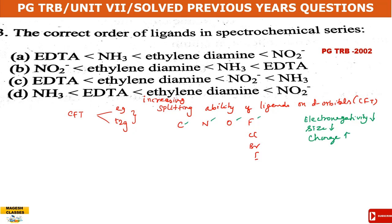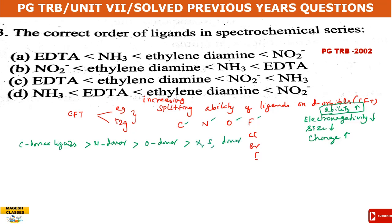As electronegativity decreases, splitting ability increases. The reason is that ligands are electron donors. A strong electronegativity means the electrons are held tightly, so donation is reduced. Therefore: carbon donor ligands are the strongest field ligands, followed by nitrogen donors, then oxygen donors, then halogen donors and sulfur donor atoms, which are very weak field.